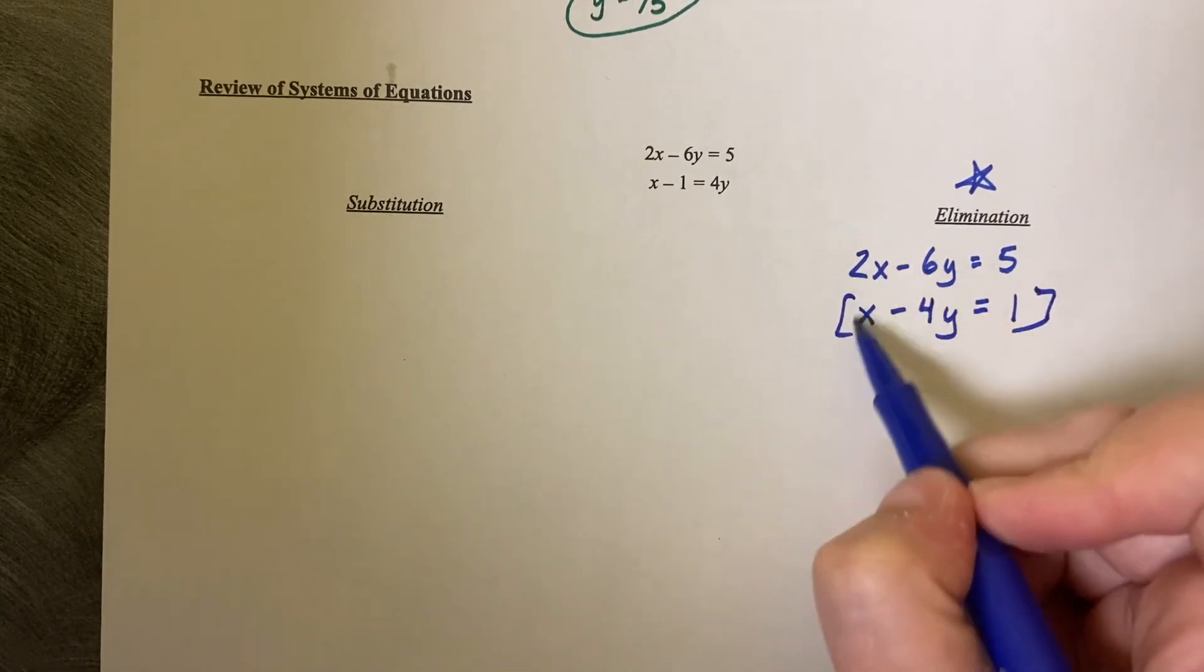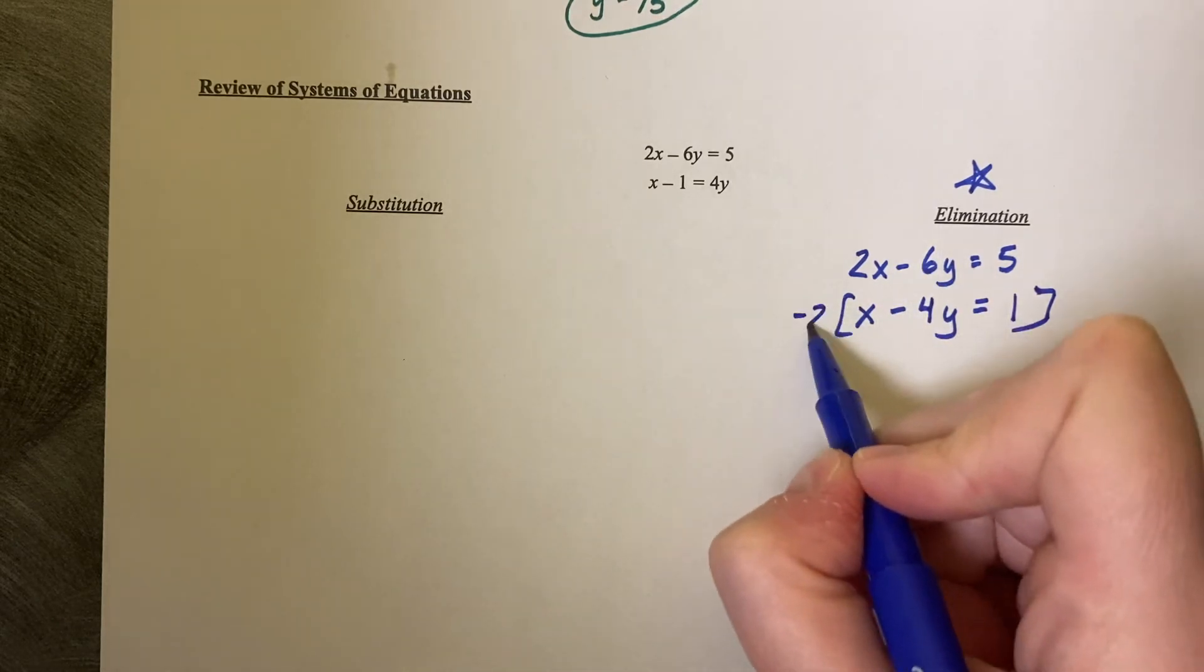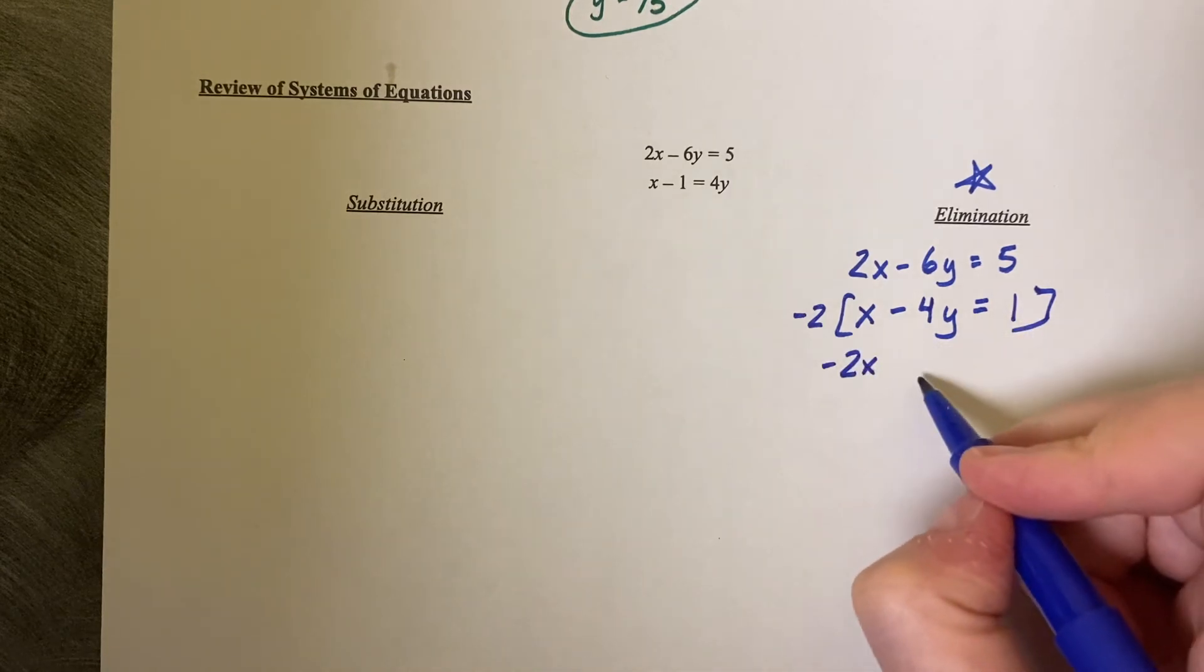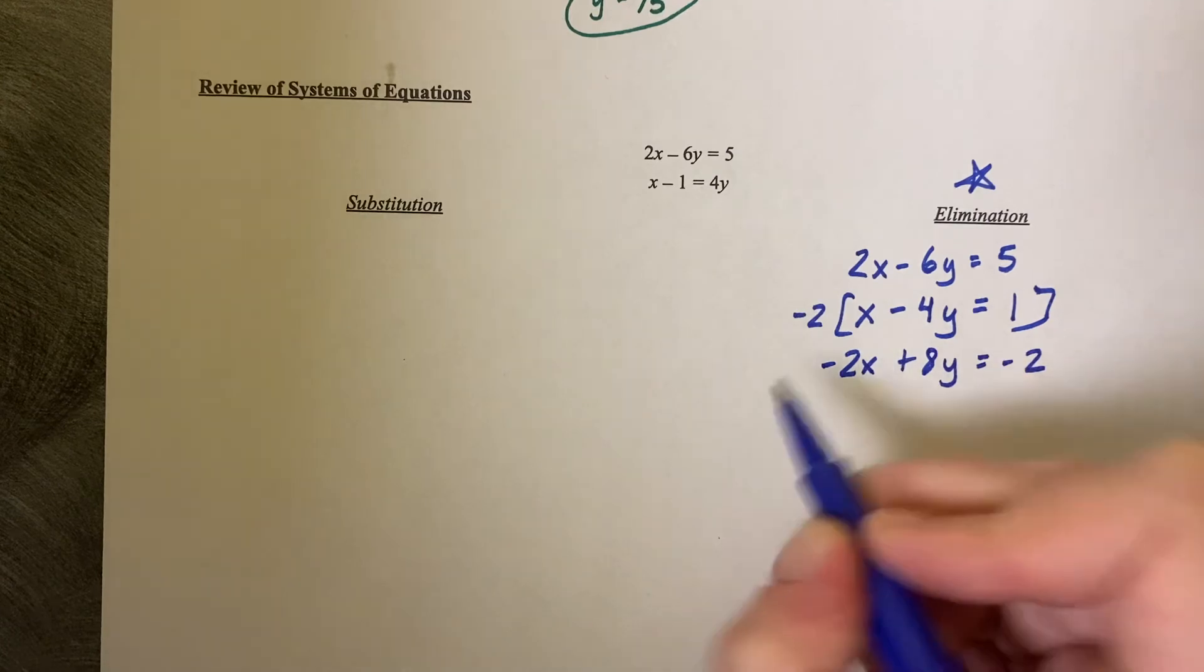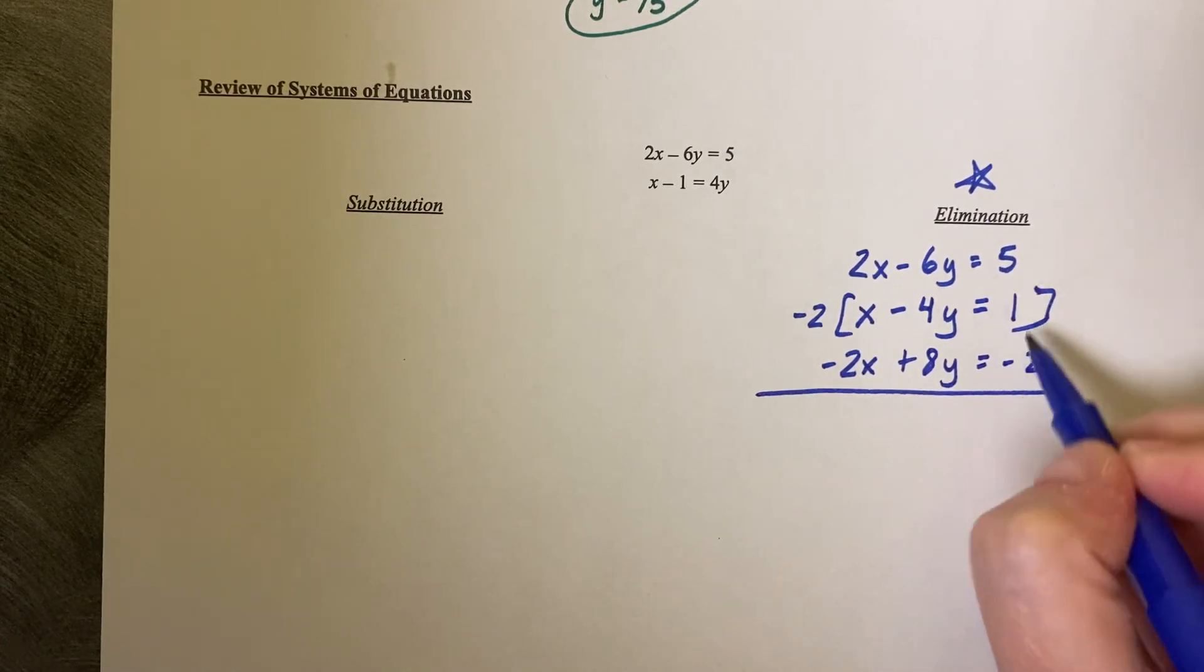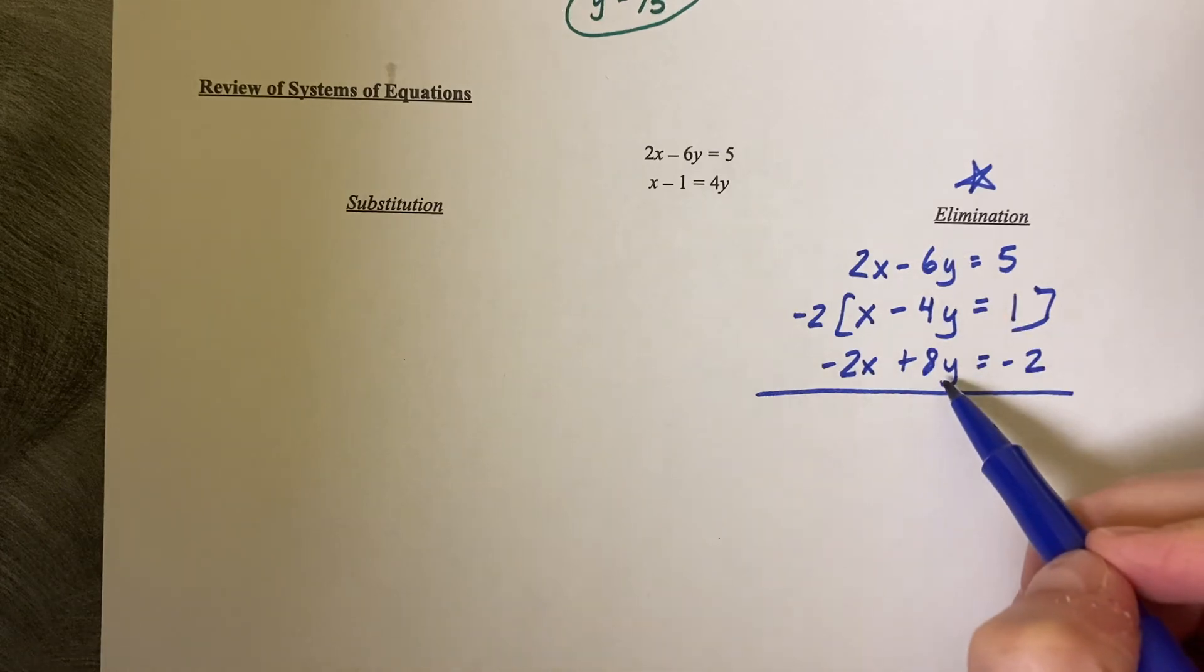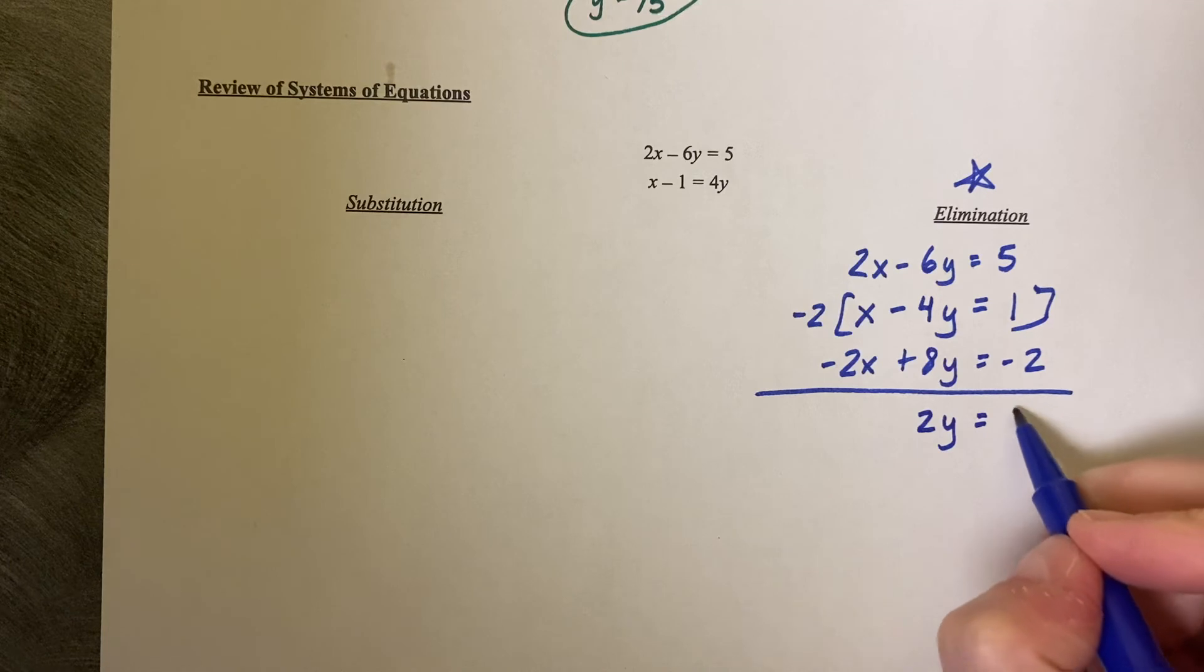So then I want these 2's to eliminate because 6 and 4 is too big for 24. So let's do negative 2. So let me get negative 2X plus 8Y equals negative 2 and then I'm adding these top 2 equations here. So the 2X's cancel. 6X plus 8Y is 2Y and then 5 take away 2 is 3.